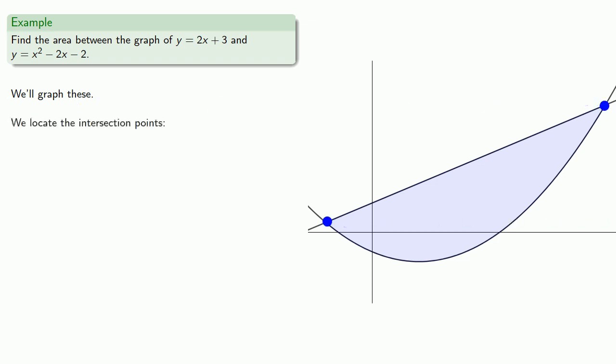We locate the intersection points, which will have the same y-values, so y has to equal y. Since equals means replaceable, we set x squared minus 2x minus 2 equal to 2x plus 3 and solve.